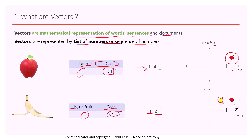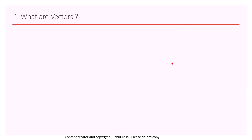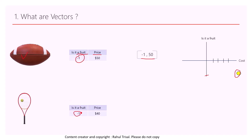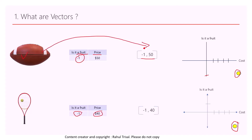Now let's represent other objects. A football is not a fruit, so the first dimension is minus 1, and the price is fifty dollars, giving us the vector [-1, 50] — plotting far from the fruits. A tennis racket is similarly not a fruit at forty dollars: [-1, 40], plotting close to the football. So for simplicity we've represented these objects in two dimensions, but in the real world each word, sentence, or document can be represented across hundreds and thousands of dimensions.